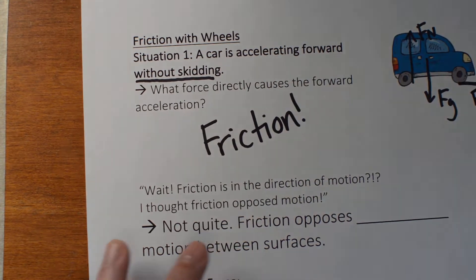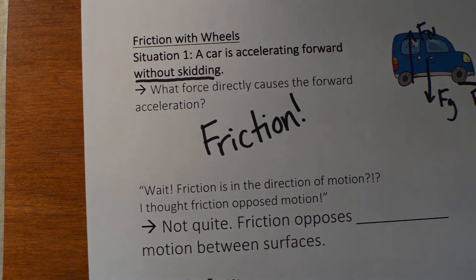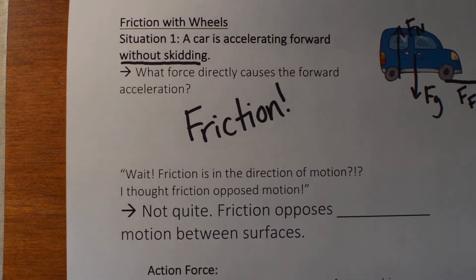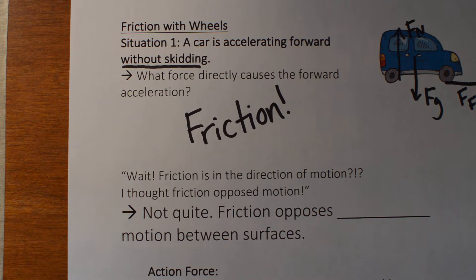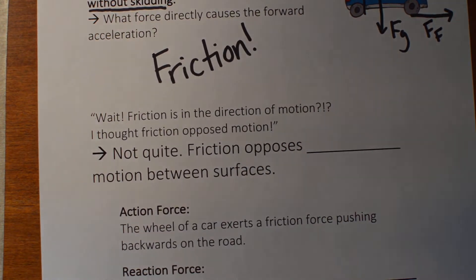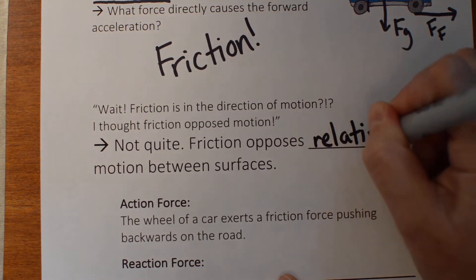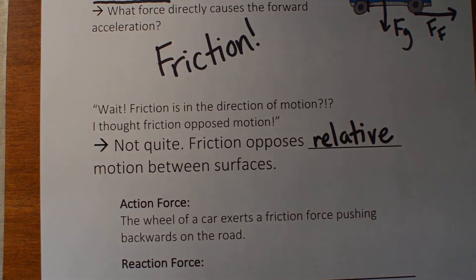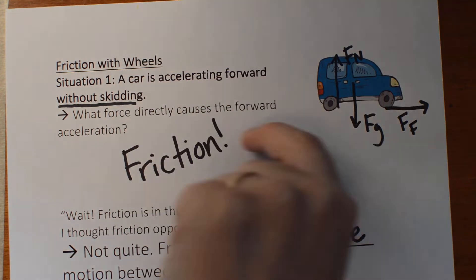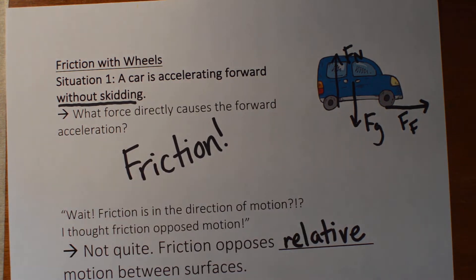If you put your car on really slippery ice and press the gas, you're not going to go anywhere. You have to have friction to accelerate. That feels a bit weird, because in our minds friction opposes motion. That's actually not quite true. Technically, friction opposes relative motion between surfaces. So friction doesn't just say 'I'm going to be backwards.' Friction can also be forward — it's opposing the relative motion between surfaces.